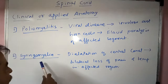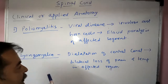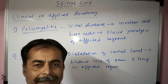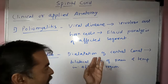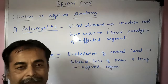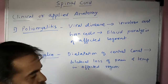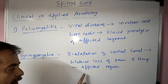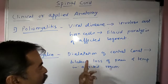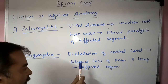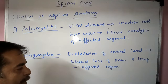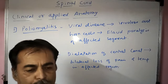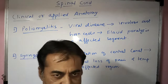The second applied condition is syringomyelia. Here, there is a dilatation of the central canal, which causes bilateral loss of pain and temperature sensation in the affected region. That is all about the spinal cord — thank you very much.